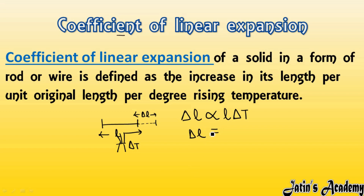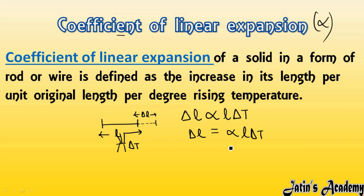To convert the directly proportional relationship to an equation, we introduce a constant. For linear expansion, this constant is called alpha — the coefficient of linear expansion. So the formula becomes: delta L equals alpha times L times delta T. The definition of alpha is: the change in length of the rod per unit original length per degree rise in temperature.